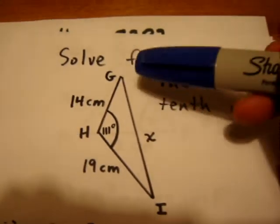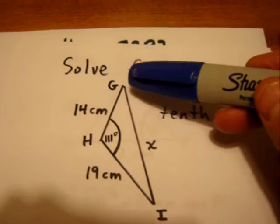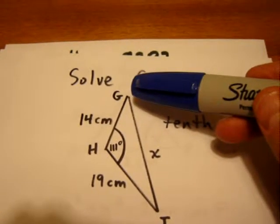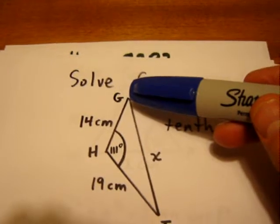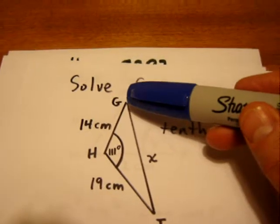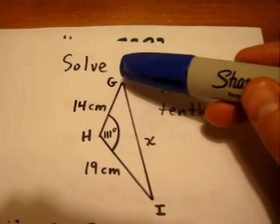What I mean by that is, in order to set up the sine law, we need to know both the side length and the angle for at least one pair, and in this case, we don't.